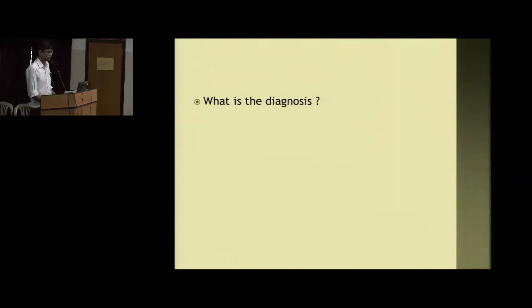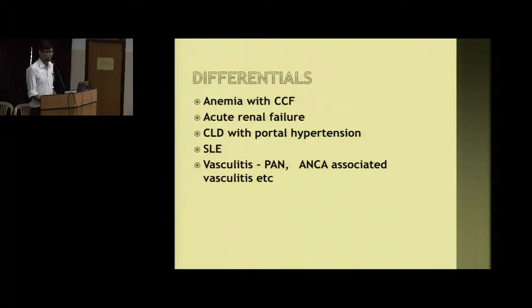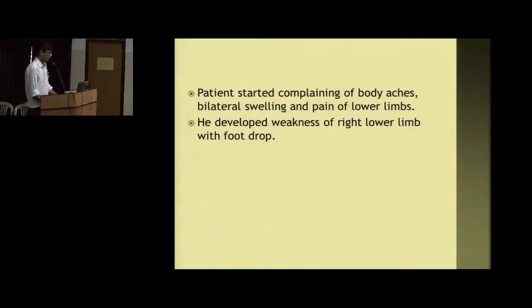The question was what the diagnosis would be. The differentials considered were: anemia with CCF given his low hemoglobin; acute renal failure given the two-month history; CLD with portal hypertension; and autoimmune disorders like SLE or other vasculitis, possibly PAN or ANCA-associated vasculitis.